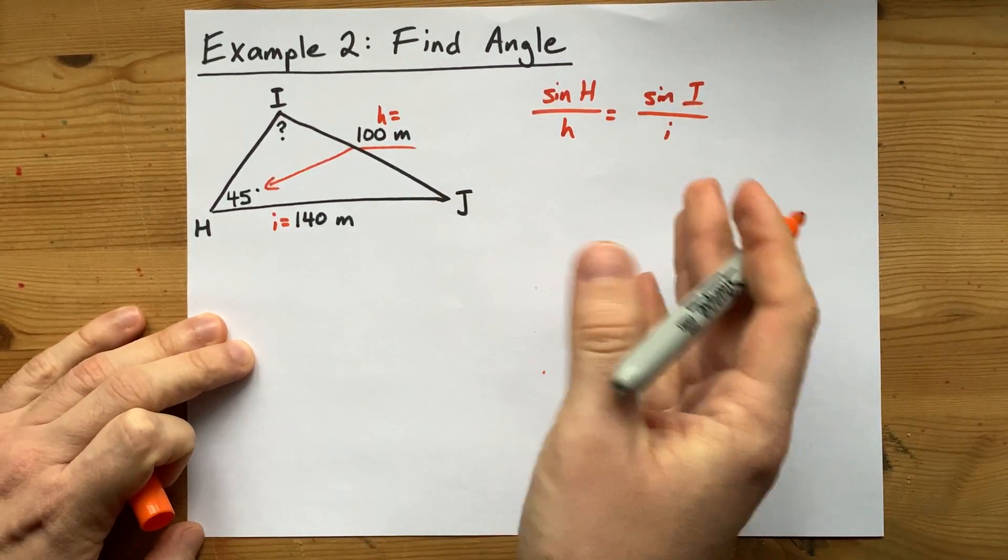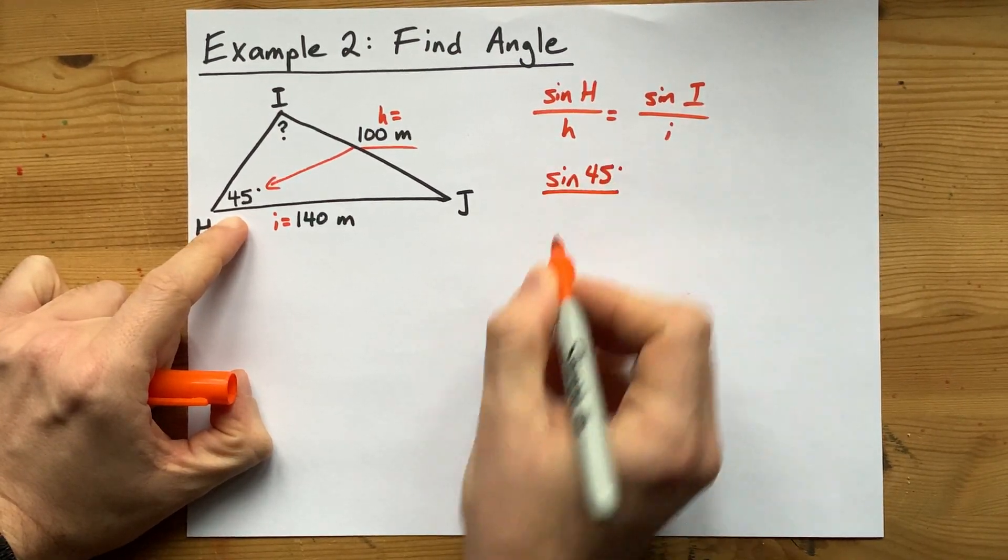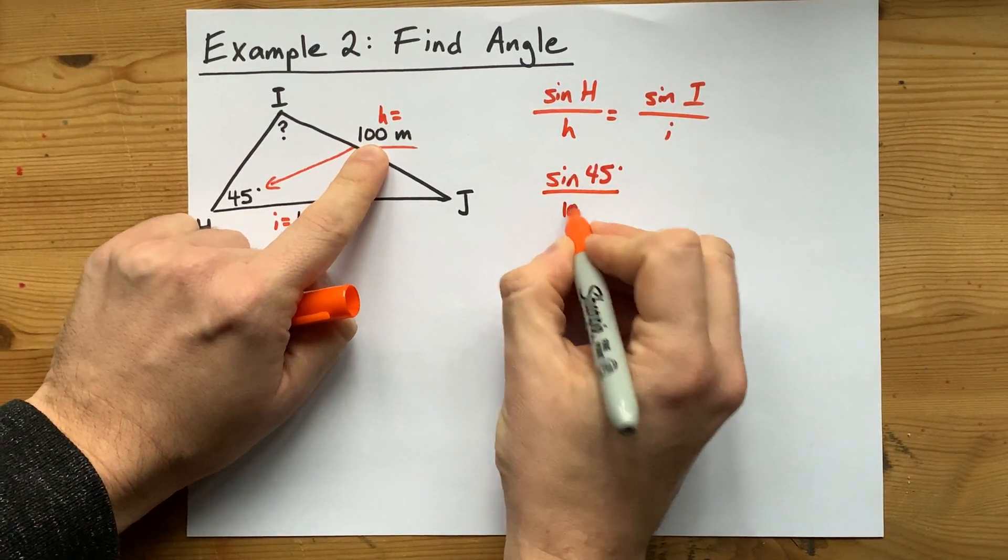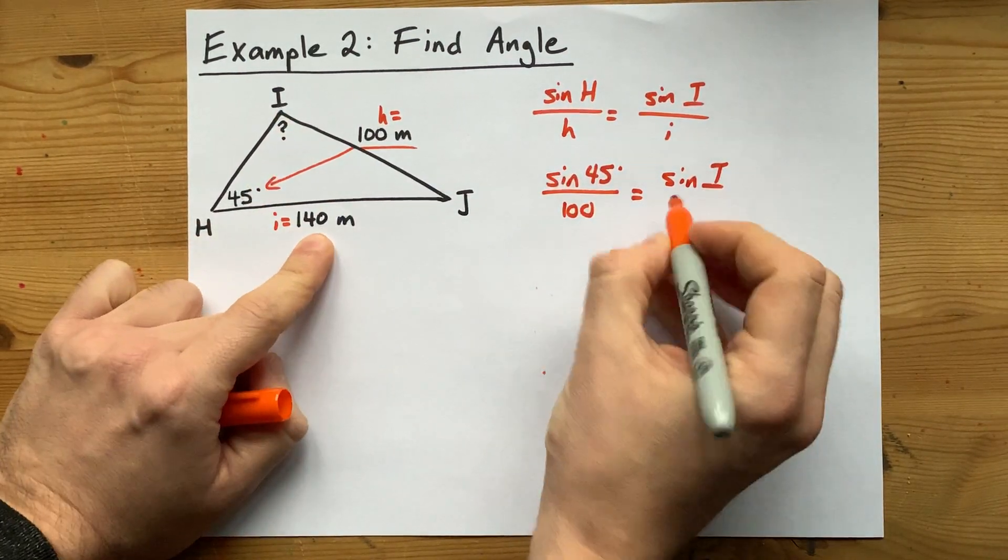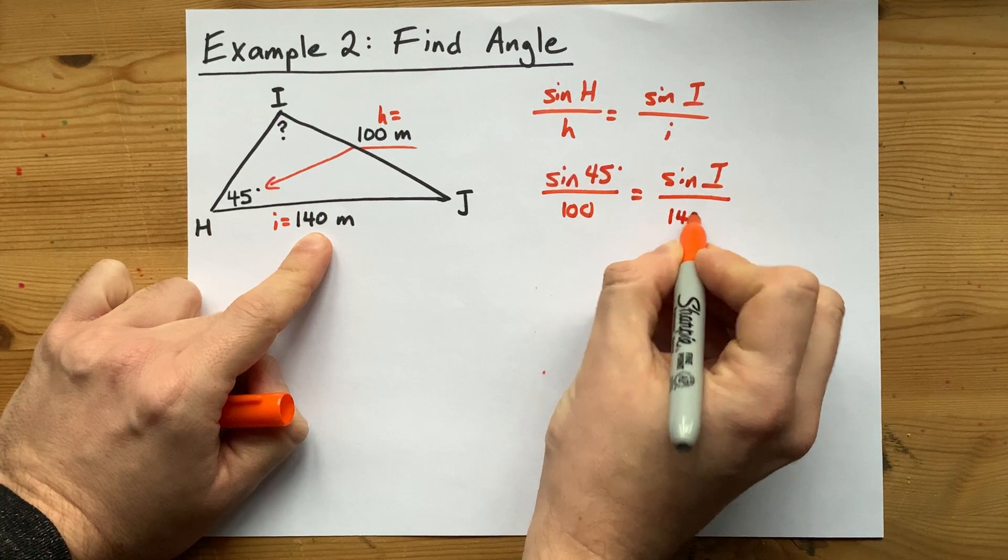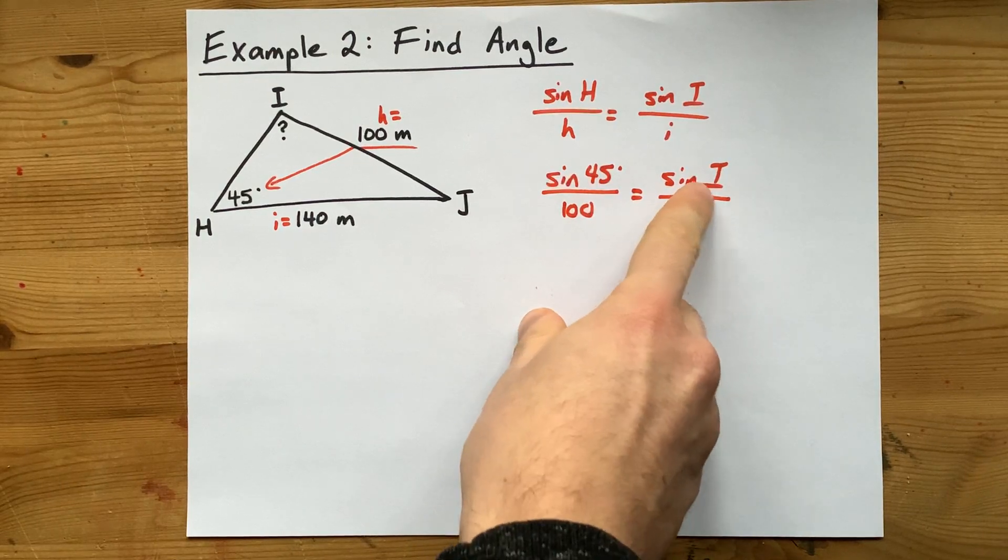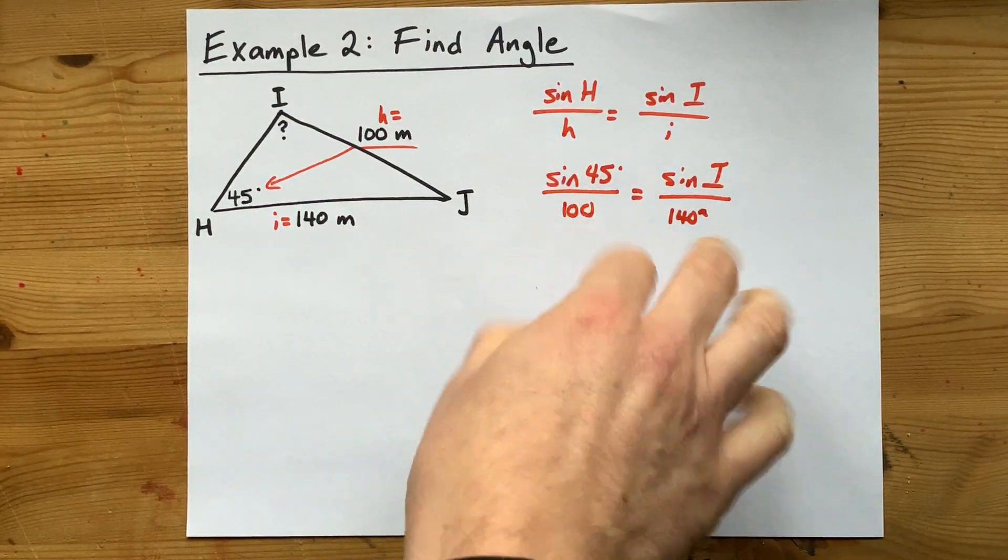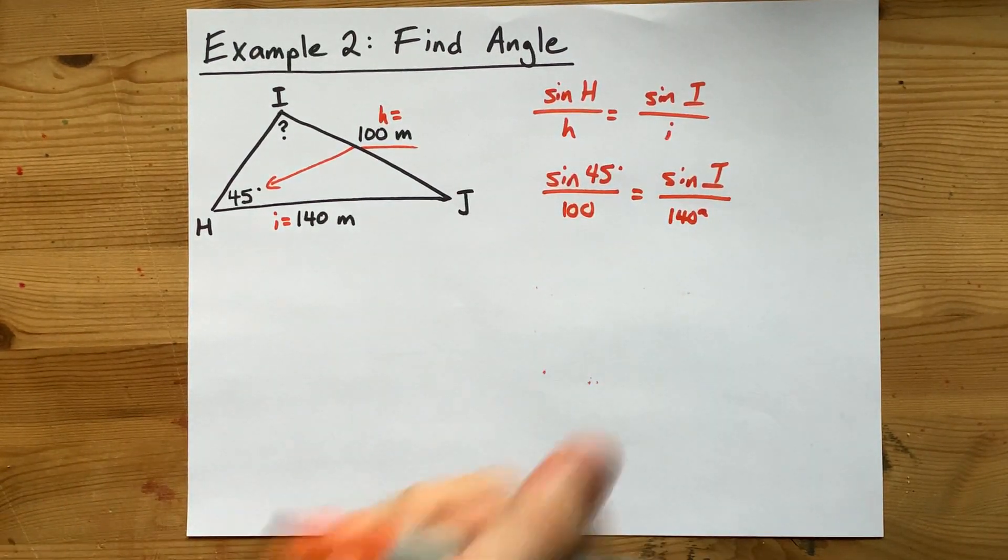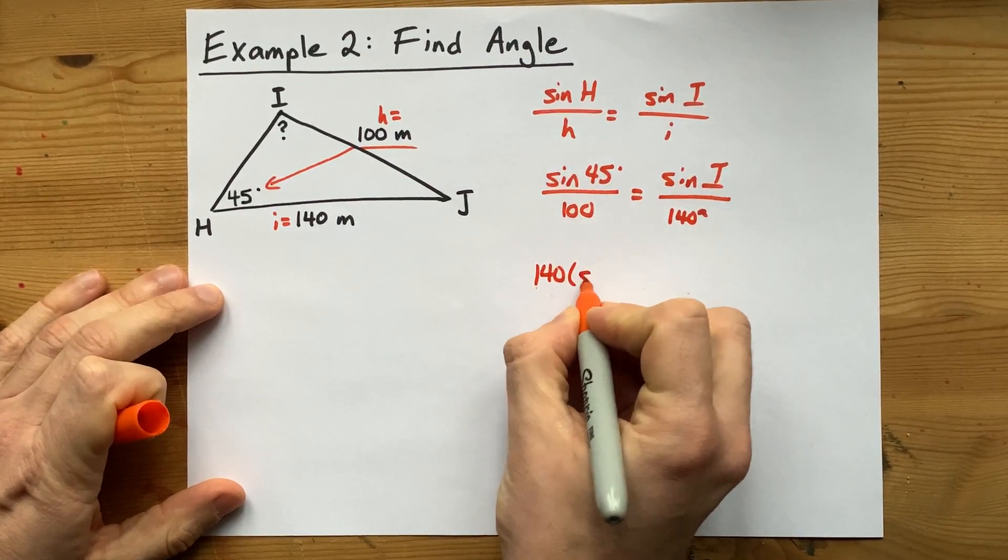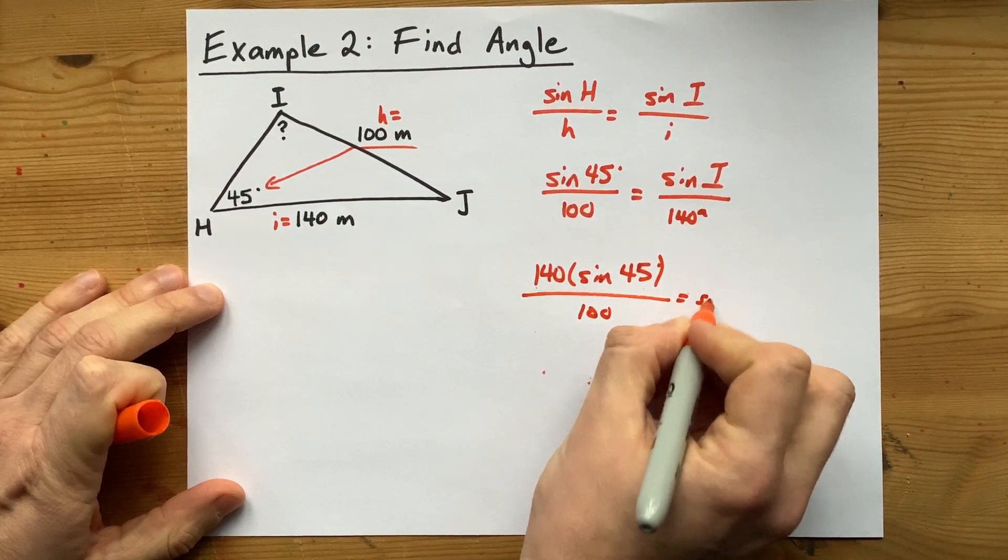And now I'm going to plug numbers in where they go. Capital H is 45 degrees. Little h is 100. I don't know capital I so I'm going to leave that there. And I do know small i is 140. In order to get to capital I here, I can cross multiply and then move the 100 over, or I could simply undo this dividing by 140 by multiplying it on the other side. 140 times the sin of 45 divided by 100 will give me the sin of I.